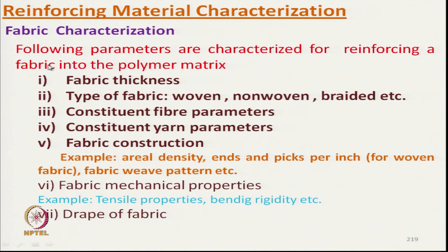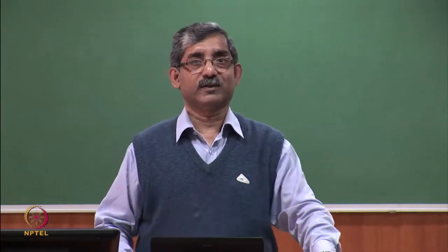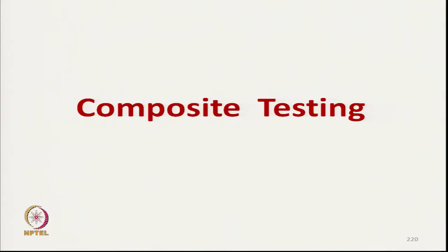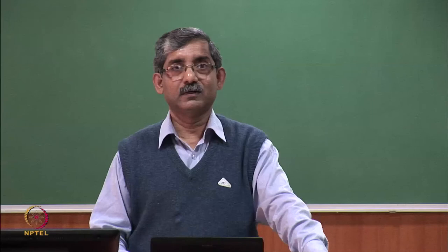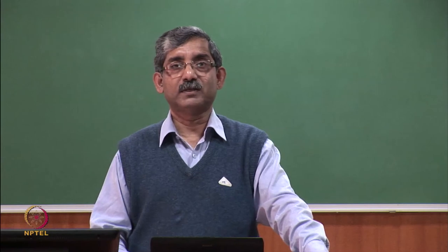For fabric characterization, we must know the fabric thickness, type of fabric (woven, nonwoven, braided), constituent fiber parameters, constituent yarn parameters, fabric construction, fabric mechanical properties, and drape characteristics. All these characteristics must be known before selecting fabrics for composite manufacturing. We will stop here; in the next segment we will discuss composite testing.